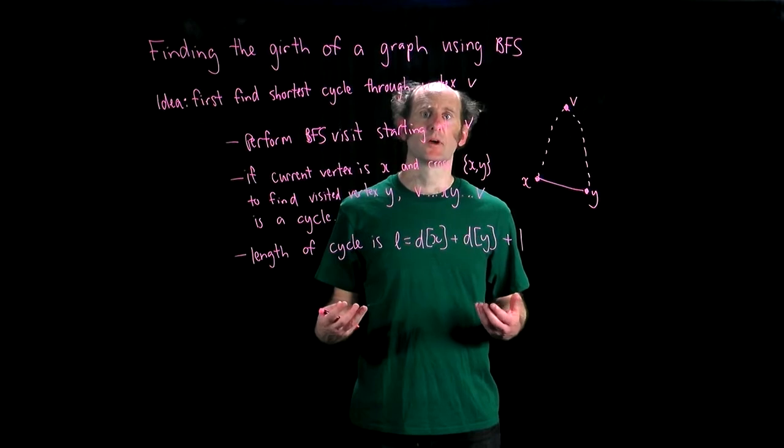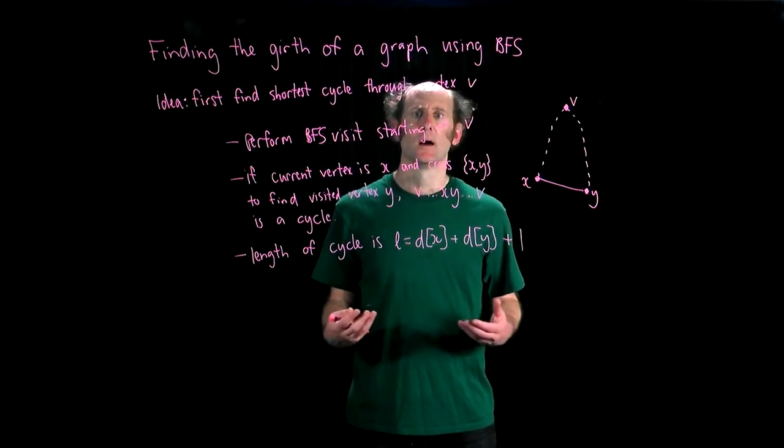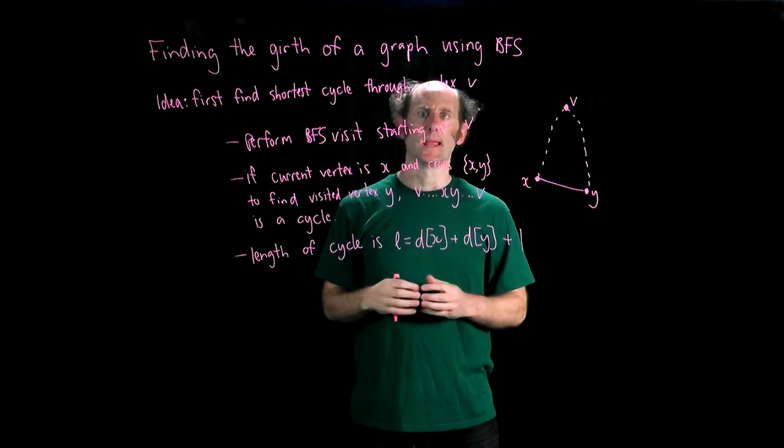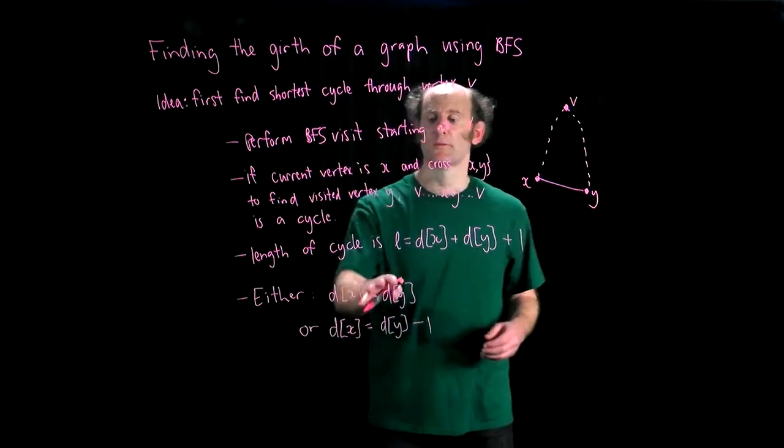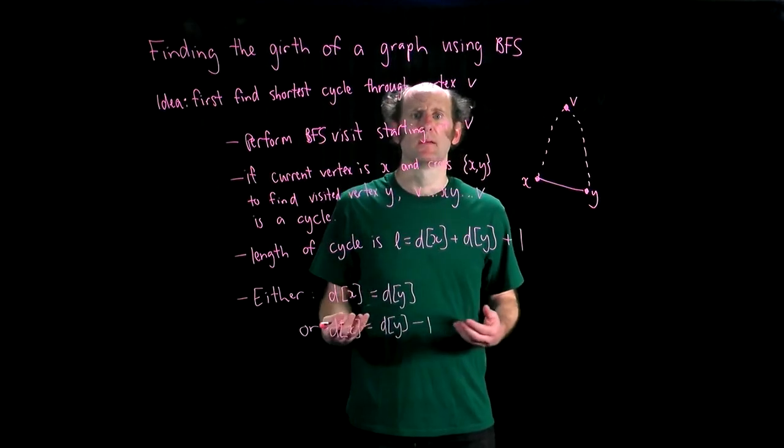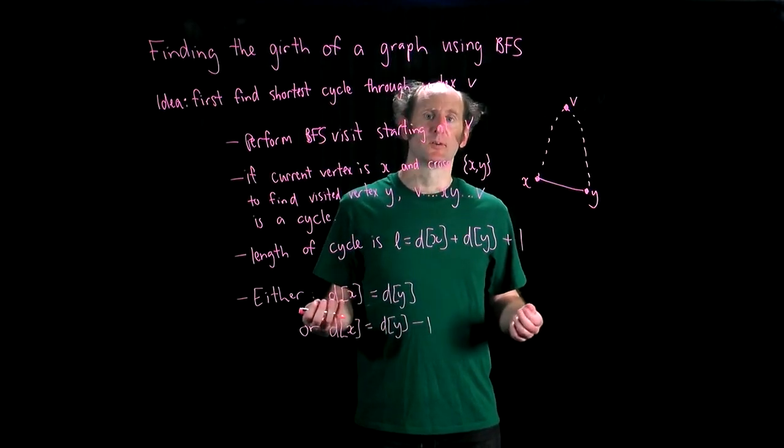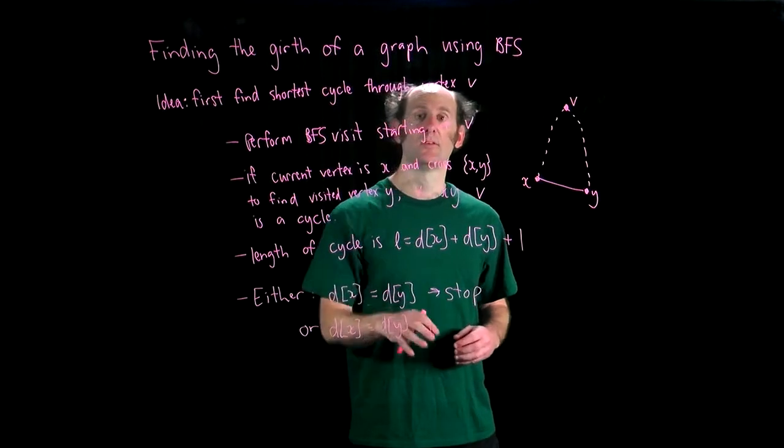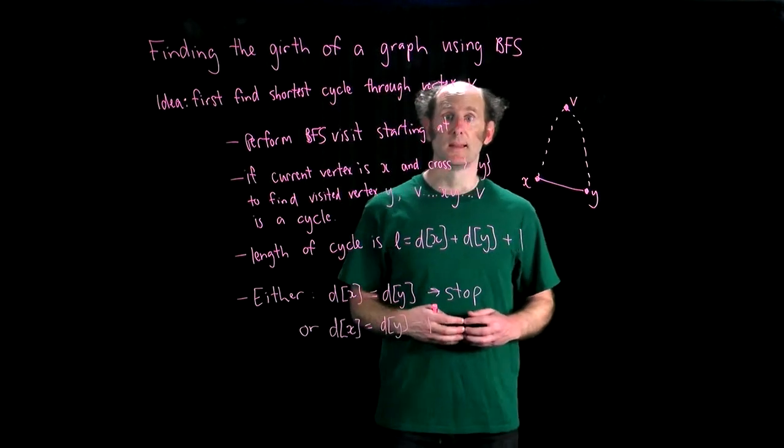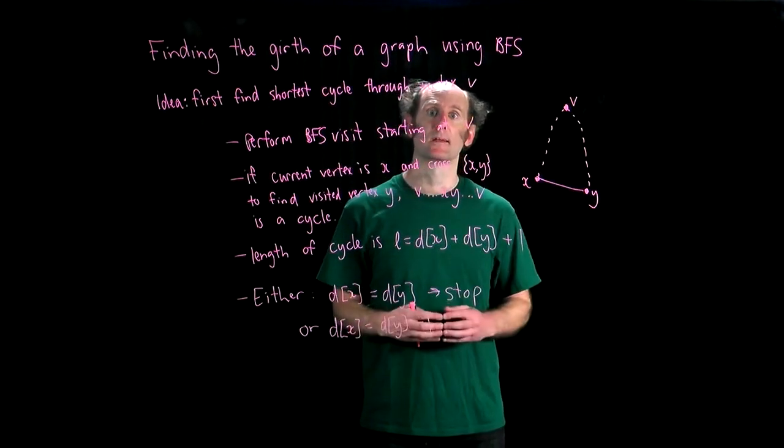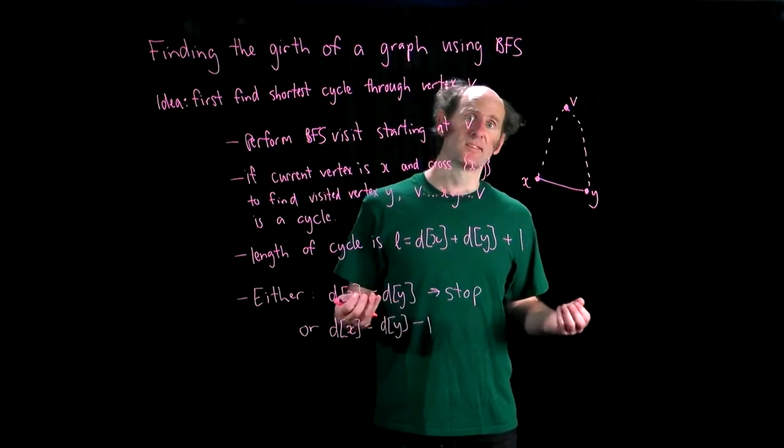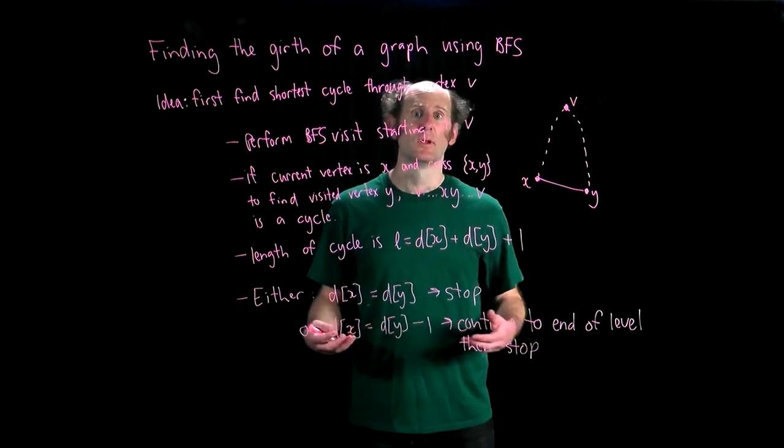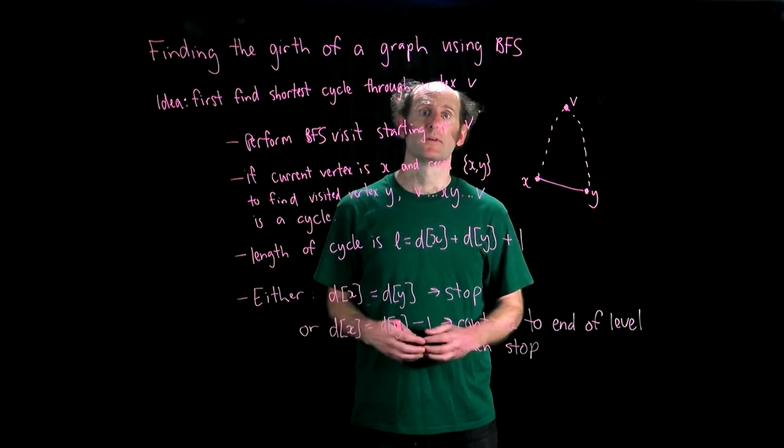The question is, is that the shortest cycle? Well, there's two cases to consider. Either x and y are on the same level, or y is one level deeper than x. In the first case, when x and y are on the same level, then the cycle is as short as it can possibly be, so we can stop. In the case that the depth of x is one less than the depth of y, then we need to continue to the end of the level we are currently exploring to ensure there's not a missing cycle of length 2dx plus 1. In this latter case, once the end of the level is reached, we return the shortest value of l found.